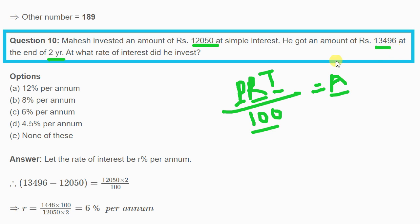The amount is 13,496 and the principal is 12,050, so the interest earned is 13,496 minus 12,050 which equals 1,446 rupees. Using the formula, we can calculate the rate is 6% per annum.